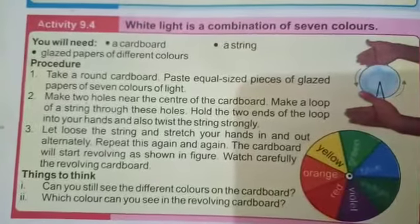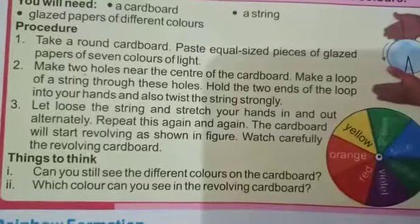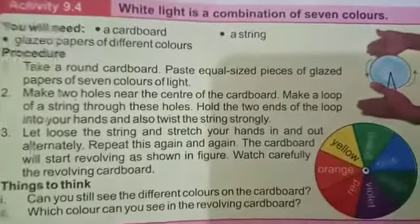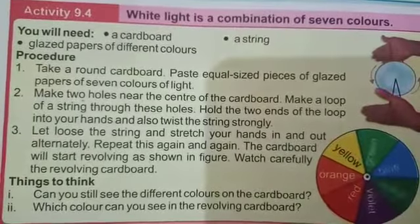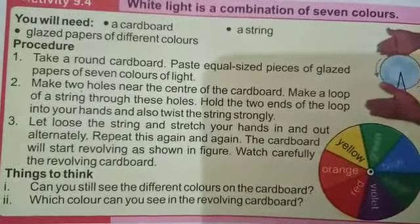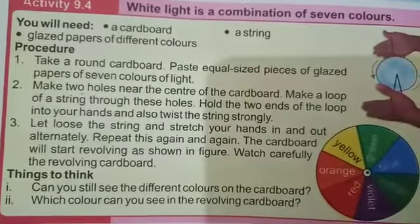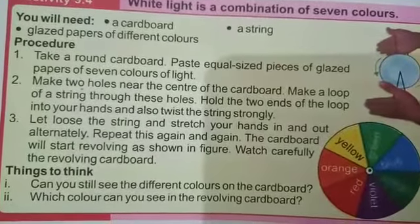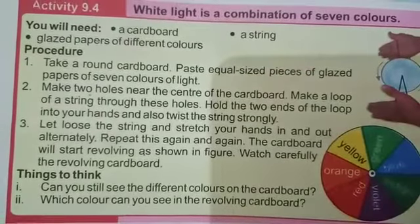Students, your task is to make a combination of seven colors of light on a cardboard using different colors of glazed papers or computer sheets, and then make a hole in the center of that circular cardboard and pass a string through it.